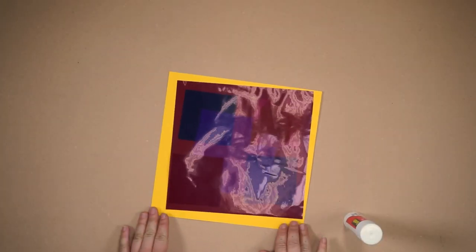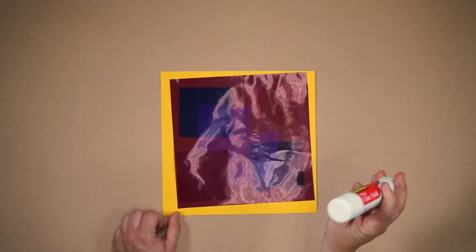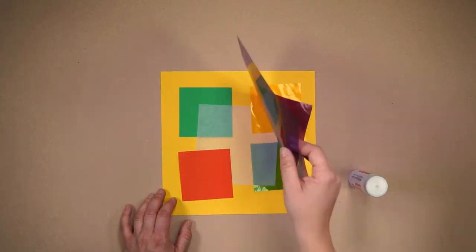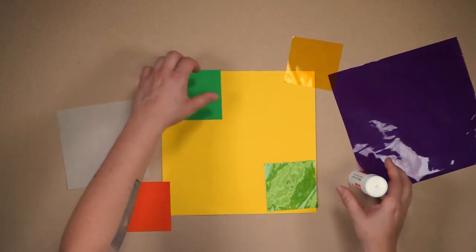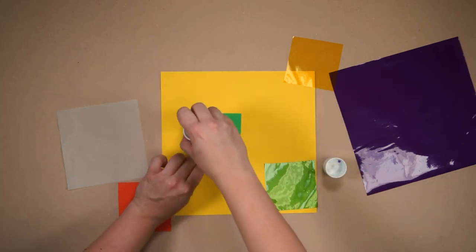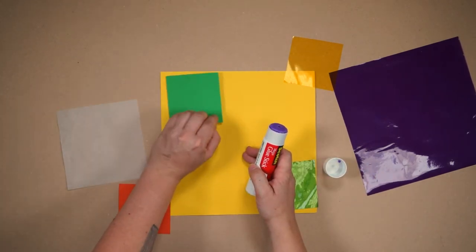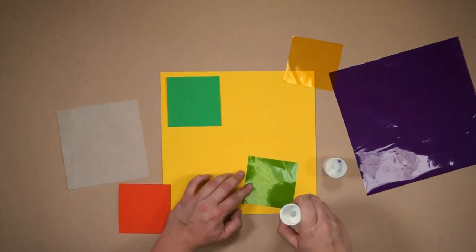Once you've decided, you're ready to glue. When you glue, try to put the glue on the corners of each square. And start by gluing the layers on the bottom first. Then work your way to the top layer.